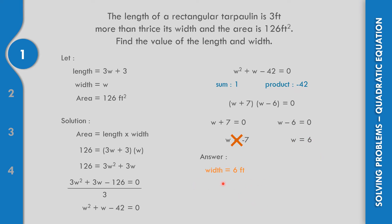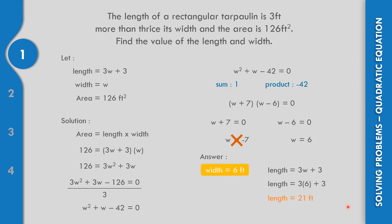If the width is equal to 6 feet, let us find the length. The formula for length is 3W plus 3, so that is 3 times 6 plus 3, which equals 18 plus 3. The length is equal to 21 feet. So the width is 6 feet and the length is 21 feet.